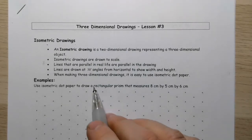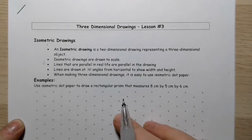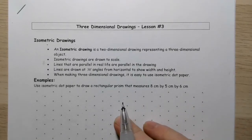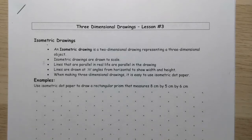When making three-dimensional drawings, it's easier to use isometric dot paper. The angles that we're using to give us the depth are handled by the isometric dot paper. Let's take a look at an example.